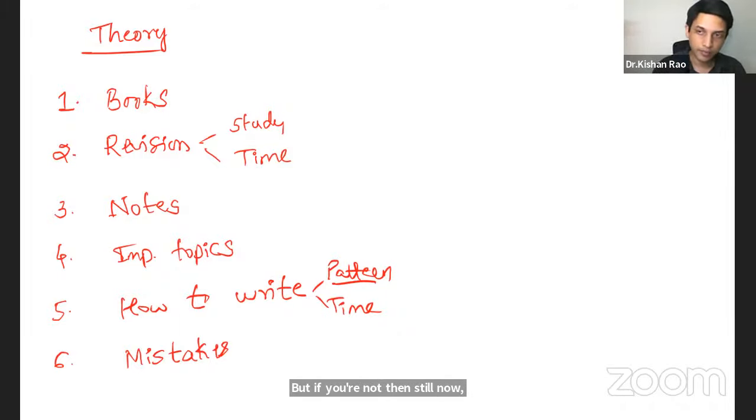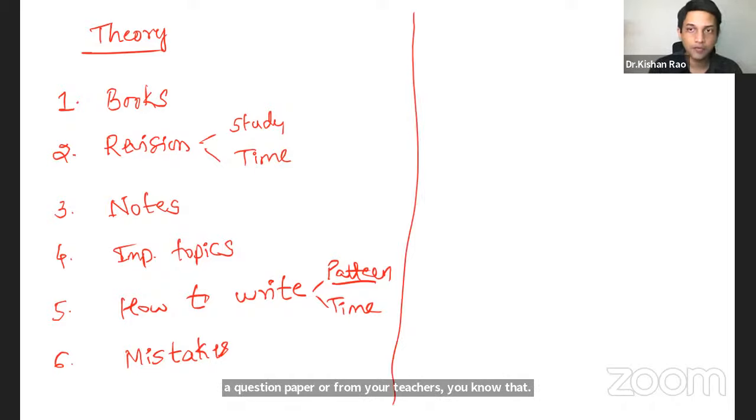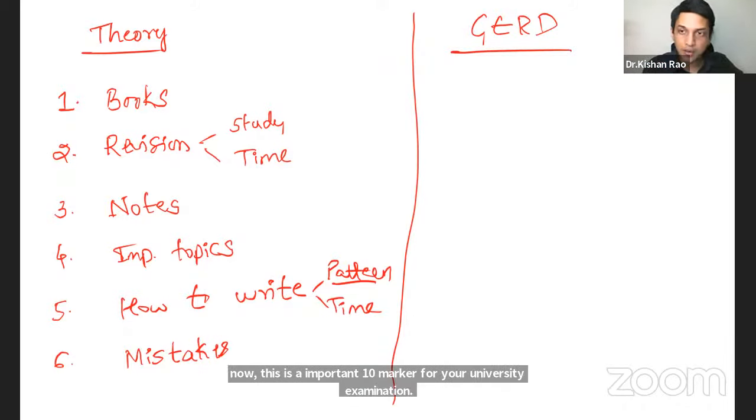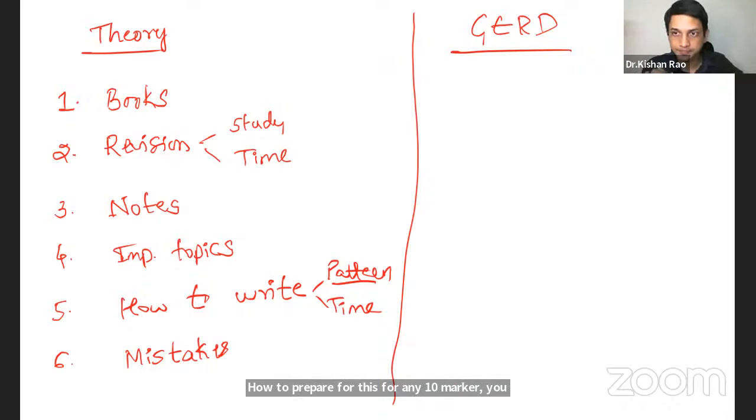Take any one important question. For example, GERD, gastroesophageal reflux disease. So, now this is an important 10 marker for your university examination. How to prepare for this? For any 10 marker, you should have 10 points. 10 keywords or 10 sentences should be there for this 10 marker question. So, while studying itself from a book, make from the one point, point number one is definition.